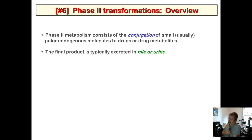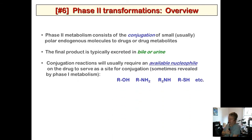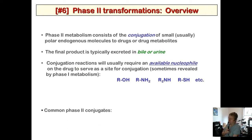Conjugation reactions require an available nucleophile on the drug — an alcohol, amine, secondary amine, or thiol — sometimes revealed by phase one metabolism. Glutathione conjugation works differently: rather than scavenging a nucleophile on the drug, it scavenges an electrophile.